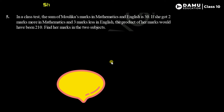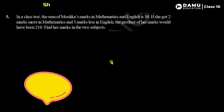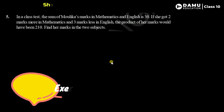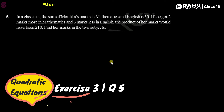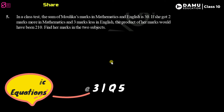In a class test, the sum of Maulika's marks in mathematics and English is 30 marks. If she got two marks more in mathematics and three marks less in English, the product of her marks would have been 210. Find her marks in the two subjects.